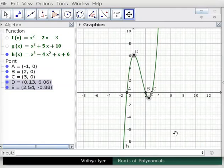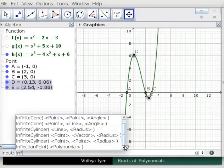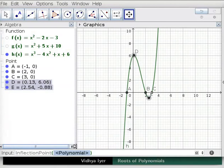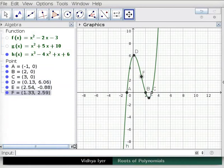Let us find the point of inflection on h of x. In input bar, type INF and scroll down menu to choose inflection point polynomial option. Instead of highlighted polynomial, type h and press enter. In algebra view, point of inflection appears as point f below the two extrema. F is mapped on h of x in graphics view.